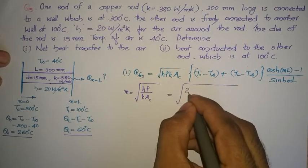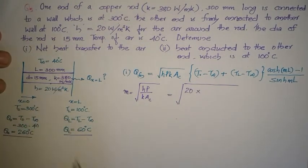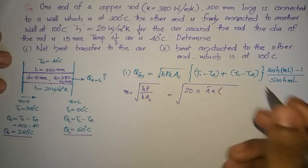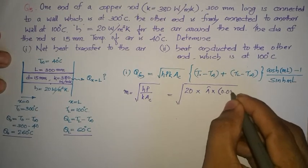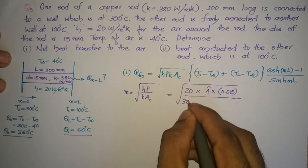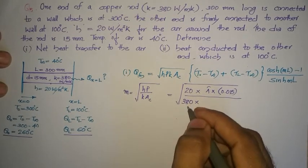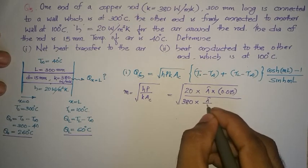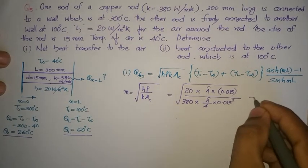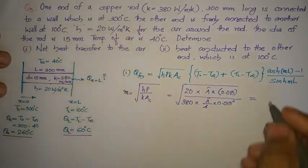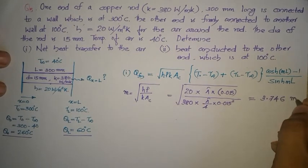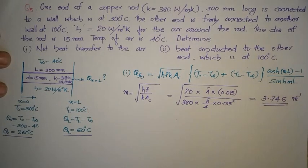M = √(H × P / K × A_c). H is 20 W/m²·K. The perimeter P for this circular rod is π × diameter, where diameter = 15 mm = 0.015 m. K = 380 W/m·K. The cross-sectional area A_c = (π/4) × D² = (π/4) × (0.015)². Solving this gives M = 3.746 m⁻¹.